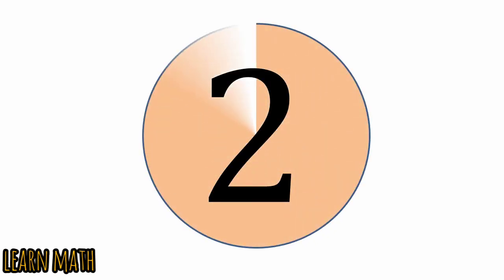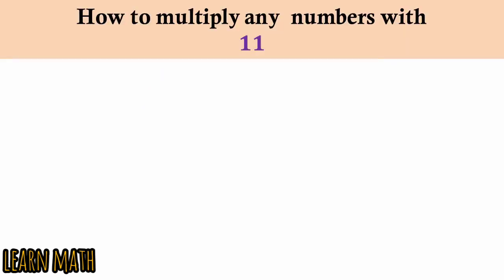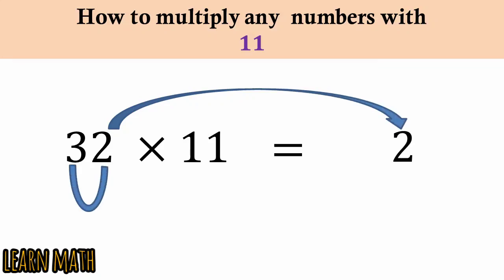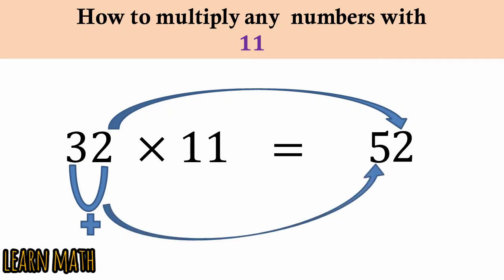The second trick is how to multiply any number with 11. For example, 32 with 11: write 2 here, then 3 plus 2 is 5, write it here, and then write 3 here — so 352 is the answer.